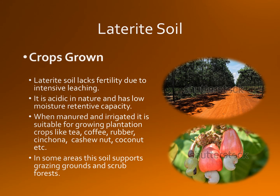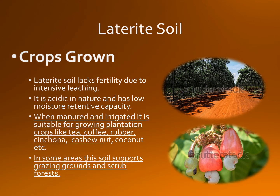Laterite soil lacks fertility due to intensive leaching. It is acidic in nature and has low moisture retentive capacity. When manured and irrigated, it is suitable for growing plantation crops like tea, coffee, rubber, cinchona, cashew nut, coconut, etc. Paddy is grown on lower elevation whereas tea, cinchona, rubber and coffee are grown on higher elevation. In some areas, this soil supports grazing grounds and scrub forest. This is a rubber plantation on laterite soil with proper manure and irrigation, and these are cashew nuts growing well on laterite soil.